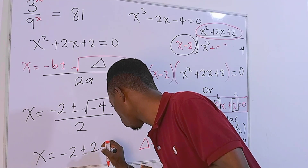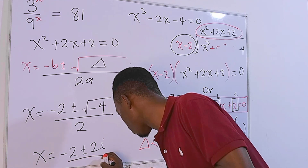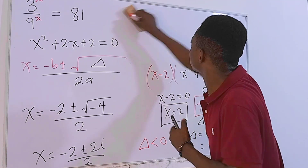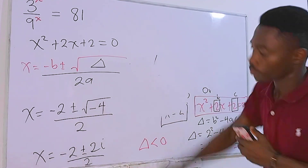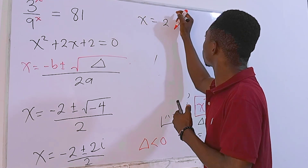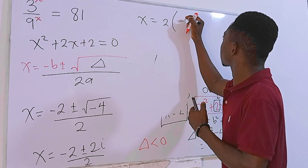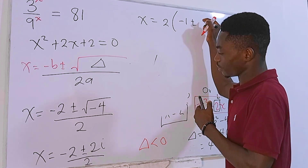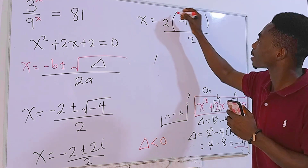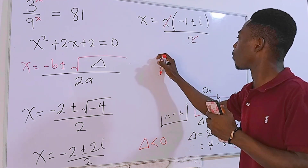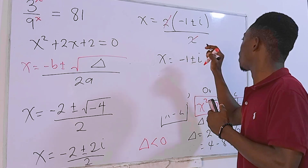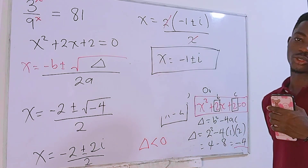The square root of negative 4 is 2i. So x equals negative 2 plus or minus 2i, divided by 2. We can factor out 2 from the numerator, giving 2 times (negative 1 plus or minus i), divided by 2. The 2s cancel, and we get x equals negative 1 plus or minus i as the two complex solutions.